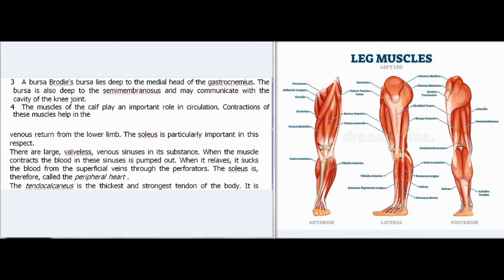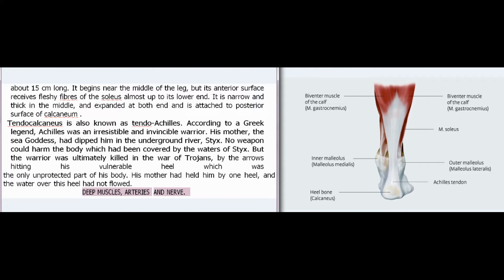The tendocalcaneus is the thickest and strongest tendon of the body, about 15 cm long. It begins near the middle of the leg, but its anterior surface receives fleshy fibers of the soleus almost up to its lower end. It is narrow and thick in the middle, expanded at both ends, and is attached to the posterior surface of the calcaneum. Tendocalcaneus is also known as tendo Achilles. According to Greek legend, Achilles was an invincible warrior whose mother, the sea goddess, had dipped him in the underground river Styx. No weapon could harm the body covered by the waters of Styx, but he was ultimately killed in the Trojan War by arrows hitting his vulnerable heel — the only unprotected part — as his mother had held him by one heel when dipping him.